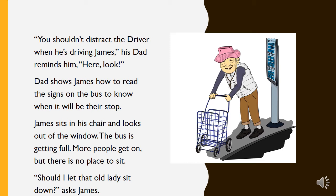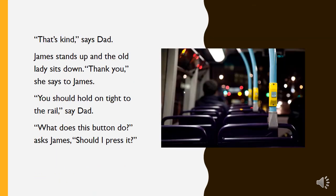Here, look — Dad shows James how to read the signs on the bus to know when it will be their stop. James sits in his chair and looks out of the window. The bus is getting full. More people get on, but there is no place to sit. Should I let that old lady sit down? Asks James. That's kind, says Dad. James stands up and the old lady sits down.